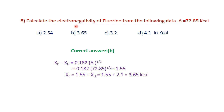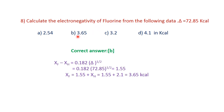Question 8: Calculate the electronegativity of fluorine from the following data. The delta value is given as 72.85 kilocalories. XF minus XH equals 0.182 × (72.85) to the power half, which equals 1.55. The electronegativity of hydrogen is 2.1. Therefore, XF equals 1.55 plus 2.1, which equals 3.65. The correct answer is B: the electronegativity of fluorine is 3.65.